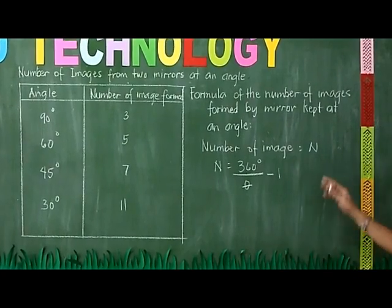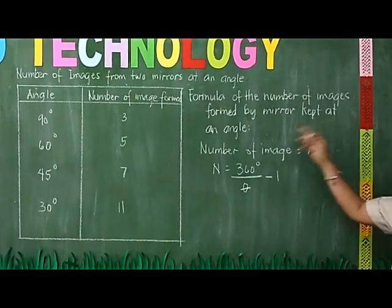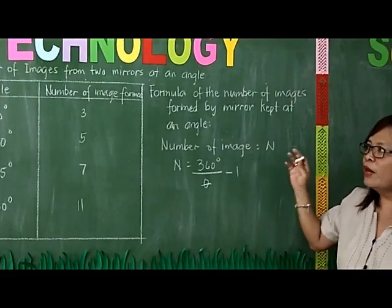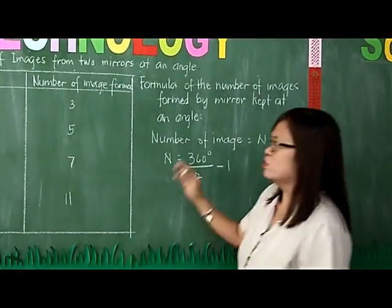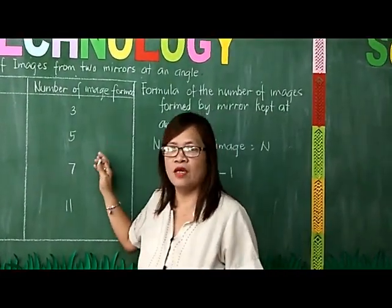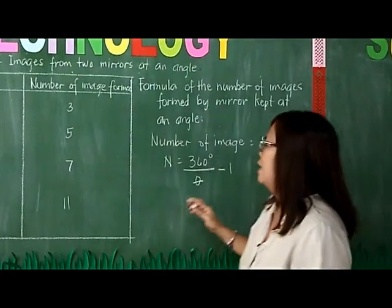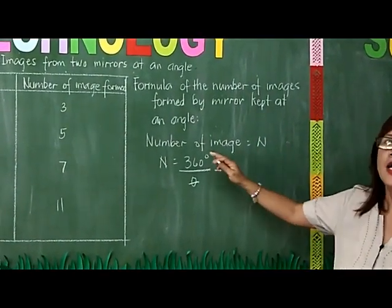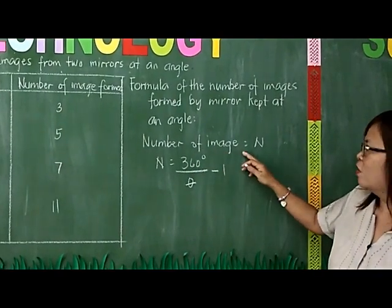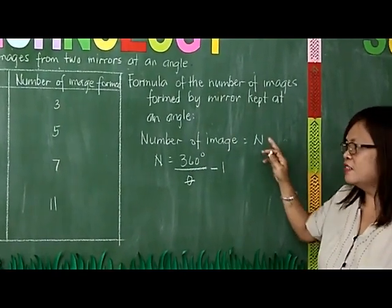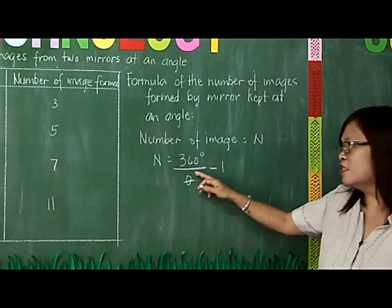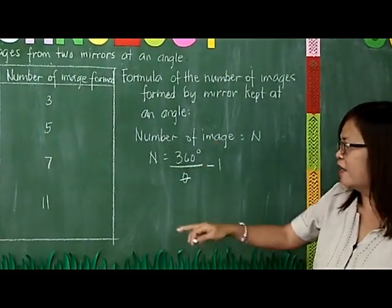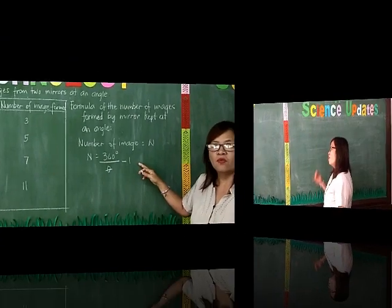Using the formula for the number of images formed by mirrors at an angle, we will verify whether the results of the activity are correct. The formula is: the number of images n is equal to 360 degrees divided by the given angle, minus 1.